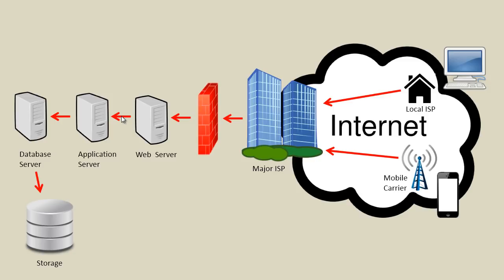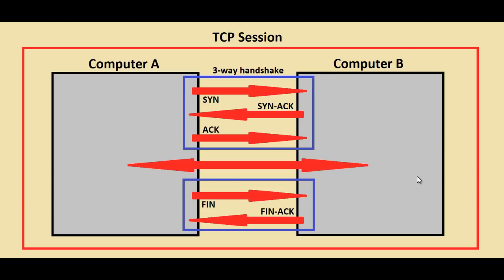TCP is fundamental to understanding networking. In this lecture, we're going to break down that relationship between computers and talk about the back and forth communication that goes on. TCP is what is used by applications to communicate to each other over an IP network. So almost every application uses TCP — internet, email, FTP, SQL.